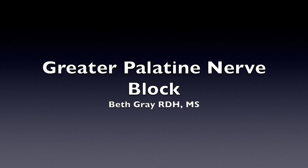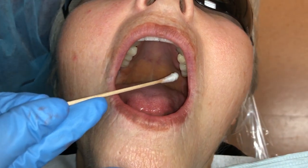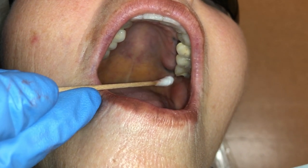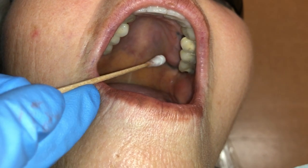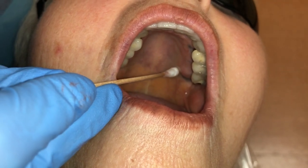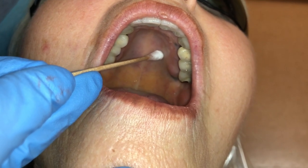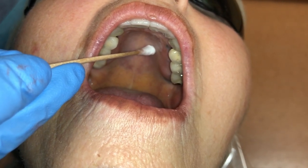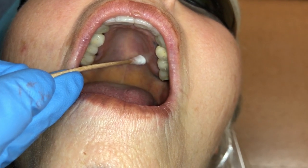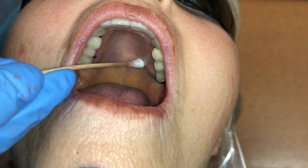The greater palatine nerve block is indicated for pain management of the posterior two-thirds of the soft tissues of the palate from premolars to molars. Landmarks for this injection include the alveolar process of the maxilla and the palatine bone. The location of this foramen is midway between the gingival margin and the midline palatine suture, distal to the first molar or between the first and second molars.